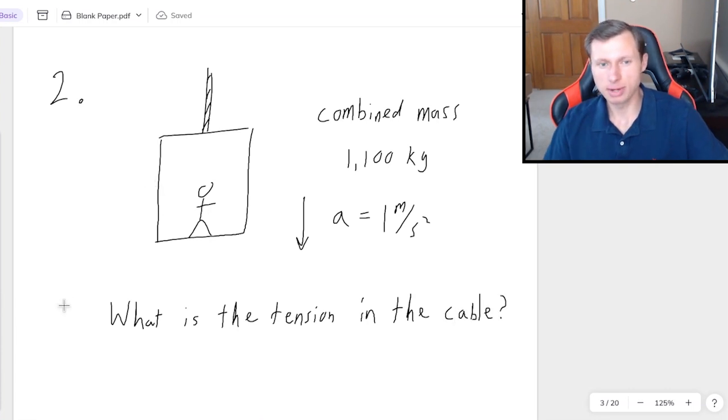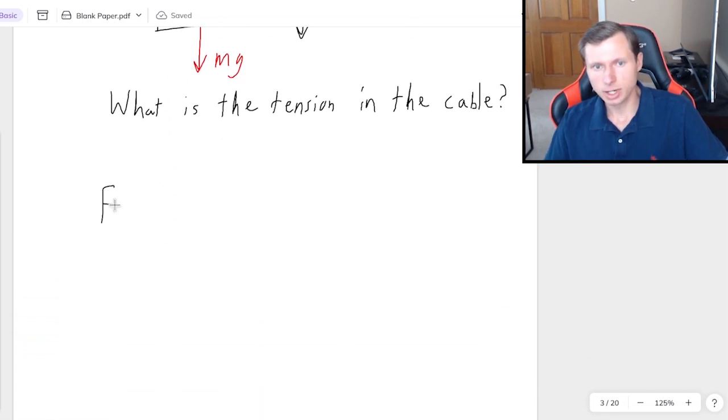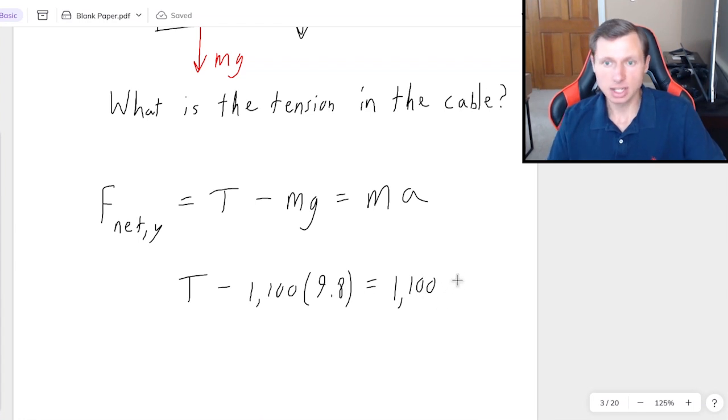So first things first, free body diagram. Again, we have mg going down, weight of the person and elevator combined this time, because that's the mass I gave us. And then we have a tension force T pointing up. That's from the cable. That's it for the free body diagram. Very similar setup. So when I write F net Y, it's going to be forces going up T minus forces going down Mg equals Ma. And now let's plug in and see what we know. Tension is what we're solving for, so we don't know that. Mass is 1,100. G is always 9.8. On the right side, mass, again, is 1,100. And the acceleration, it's not 1, it's negative 1. Negative because it's going down.